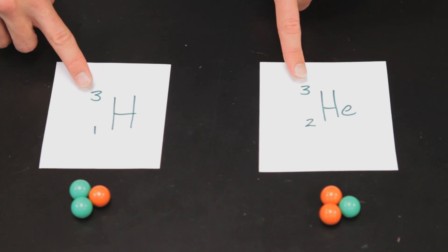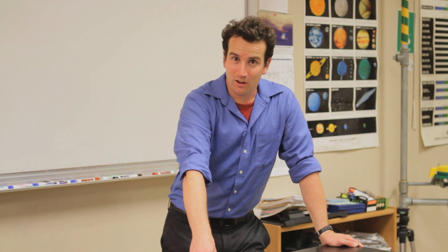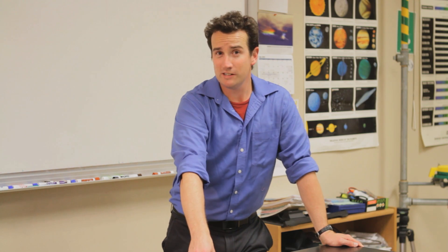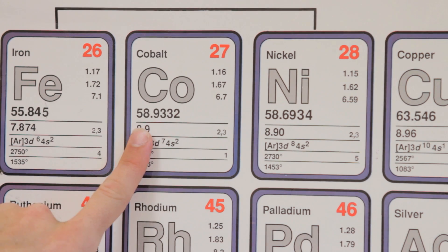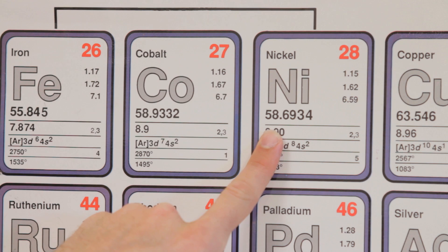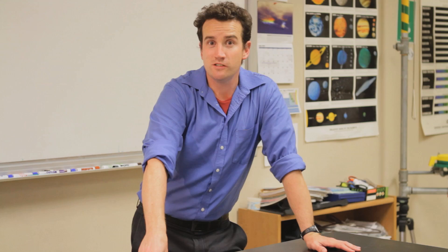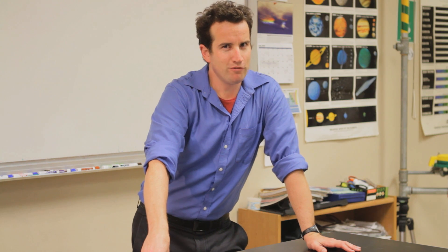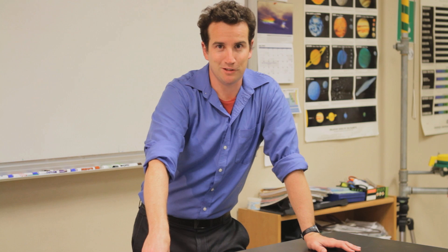Elements are not identified by their mass number — not anymore. Originally, Dmitry Mendeleev, when he made the periodic table, organized elements by their mass numbers, and he had made a few mistakes. For example, nickel and cobalt were switched. The mass number does not determine the chemistry of an element. That's determined by the number of protons, which is the atomic number. Therefore, mass number does not provide a reliable means by which to identify an element.